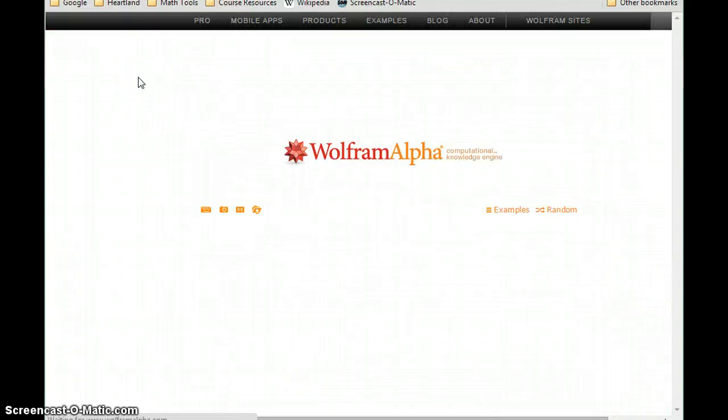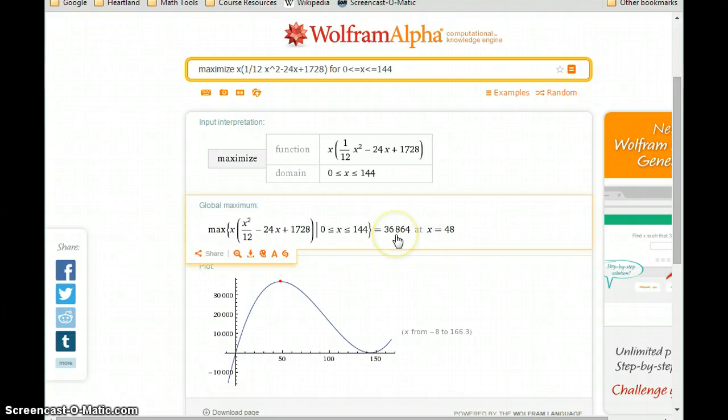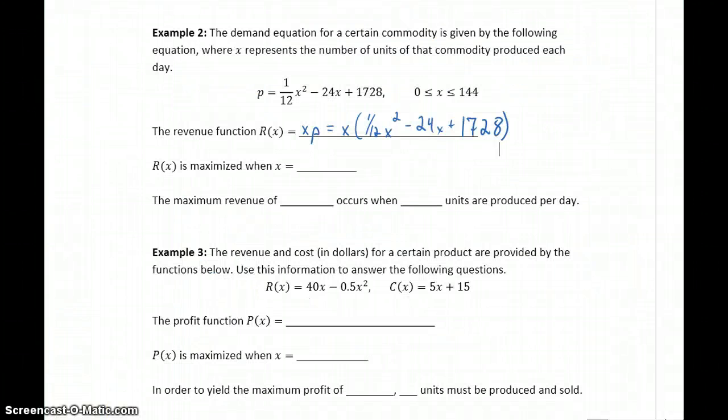So, in this case, we're maximizing this function over a given domain, and we're getting that maximum value occurring when x is 48, and we're also being given that maximum function value. In this case, r will be maximized when x is 48, so we'll be achieving a maximum revenue of $36,864, when 48 units are produced each day.